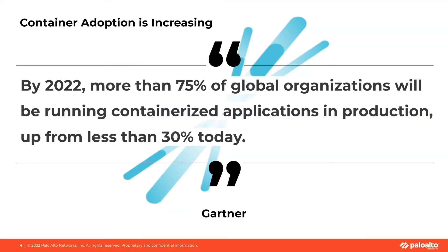I'd like to open with the following quote recently put forth by Gartner, which is that by 2022, more than 75% of global organizations will be running containerized apps in production, which is up from less than 30% today. This really shows that 2022 will bring about a step change in the adoption of containerized apps and Kubernetes at scale. And so this begs the question: how do we best go about securing these containerized apps?